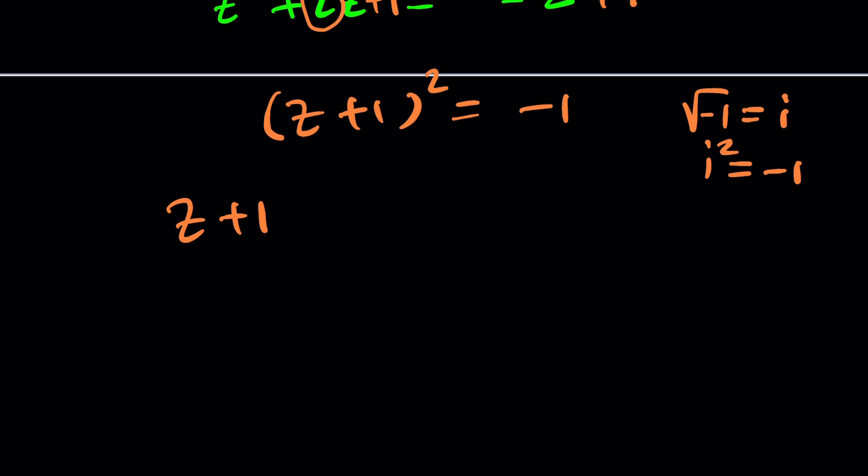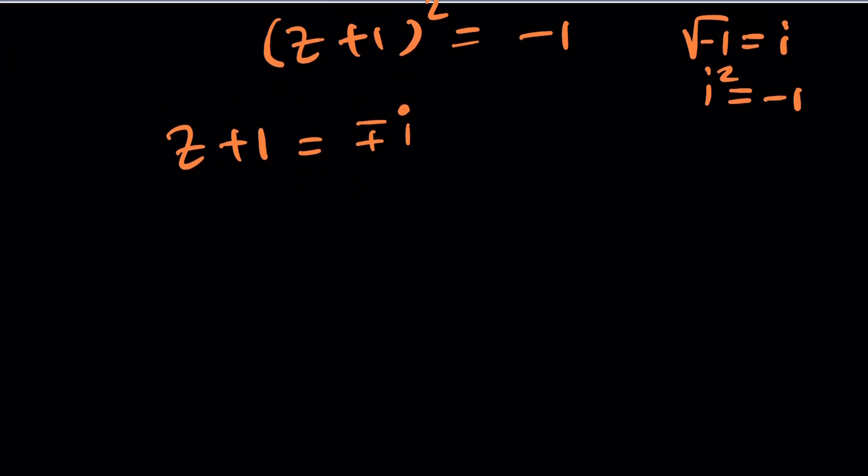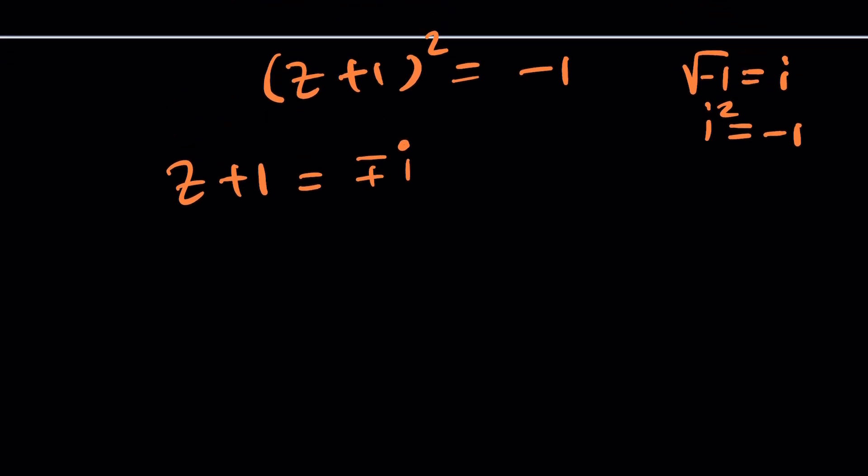That's how we define it. So z plus 1 is going to be i, but there's another number whose square equals negative 1, which is negative i. Actually, negative 1 has two square roots, but i is the square root, which is the principal square root. That's why I said the square root. So this is going to be plus minus i, because when you square, you get negative 1 either case. And now we're going to subtract 1 from both sides, or add negative 1. And this is going to give us the solutions.